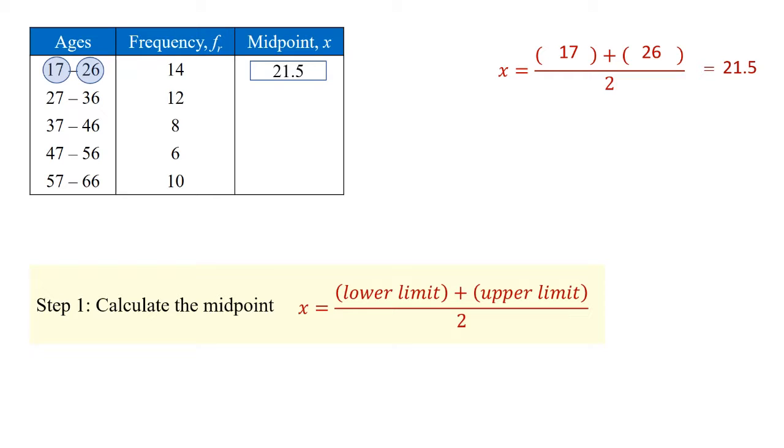Moving on to the second cell, the age group is 27 to 36. We take 27 plus 36, add the two together, divide by 2, and we have 31.5, which becomes its midpoint value.